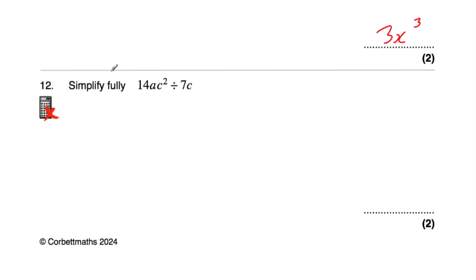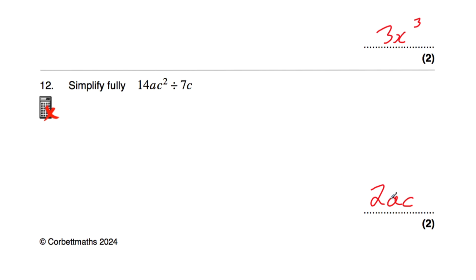Question number 12: simplify fully 14ac² divided by 7c. 14 divided by 7 is 2. The a is not being divided by anything, so we keep it. c² divided by c is c. So the answer is 2ac. Checking: 2ac multiplied by 7c — 7 times 2 is 14, and c times ac is ac². ✓